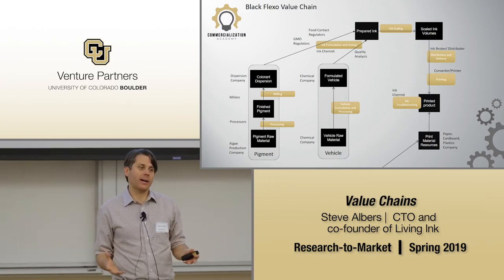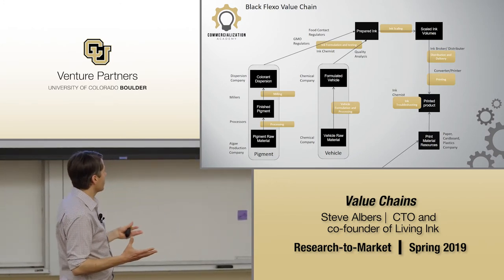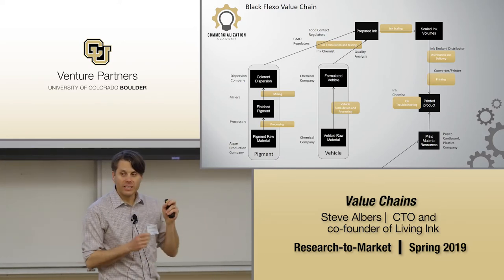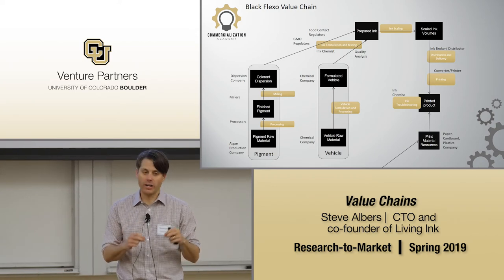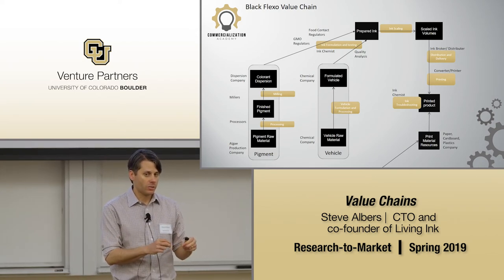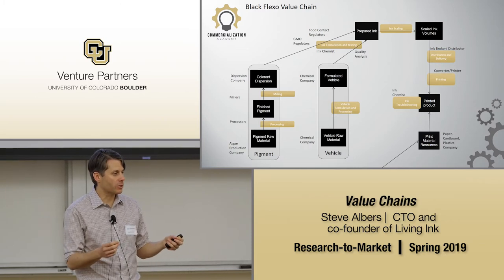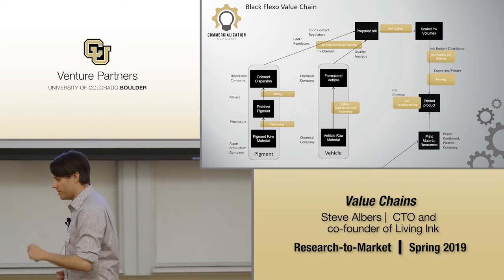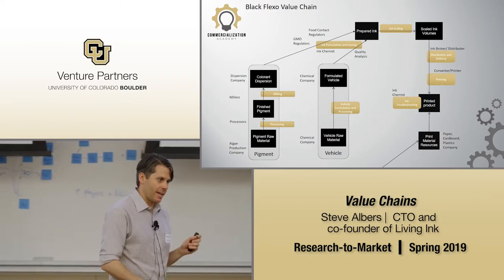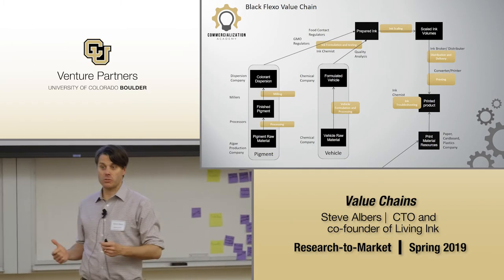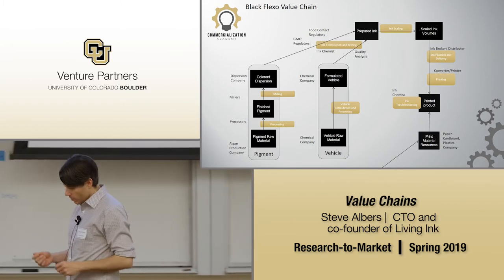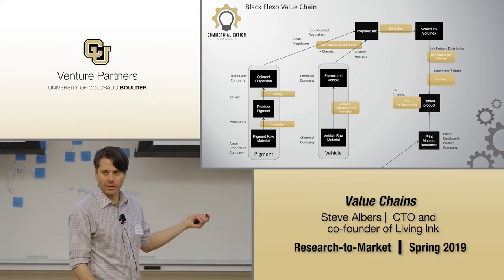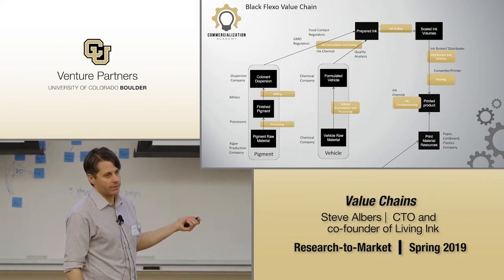At these giant print houses — they call them converters — that print for huge companies, the ink company literally has an employee on site. That ink company spends $100,000 per year per big print house just to have someone there checking: 'Is the ink good today? Is it too sticky because of the humidity? Let me add this.' We were asking: are we going to become an ink company? I don't think we can do that right now.